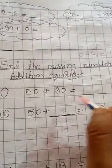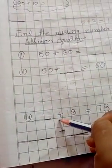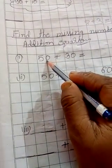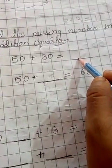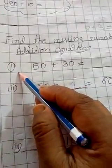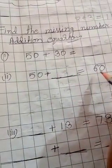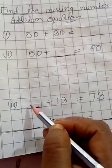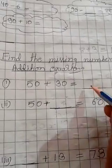Now let us find out the missing number in an addition equation. There are three types of questions. First, where we have to find out the sum. The numbers which are added are called addends — this is the first addend and this is the second addend — and the answer we get after adding them is called the sum. In the second type, the first addend and sum are given and we find the second addend. In the third type, the first addend is missing and the second addend and sum are given.